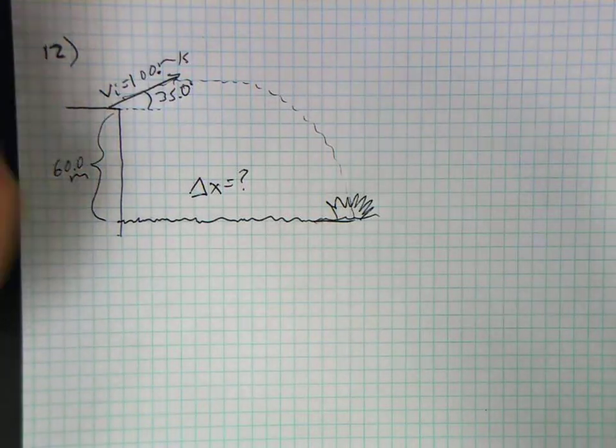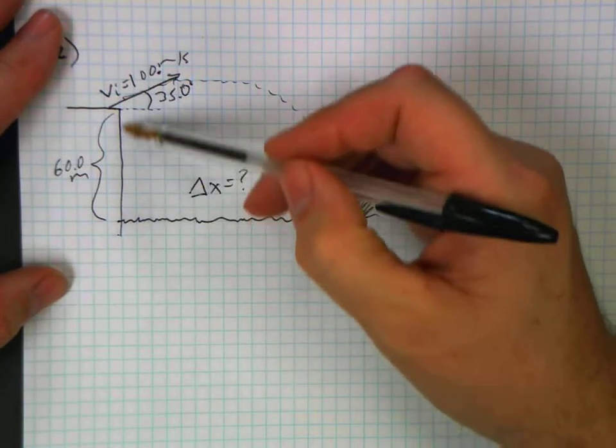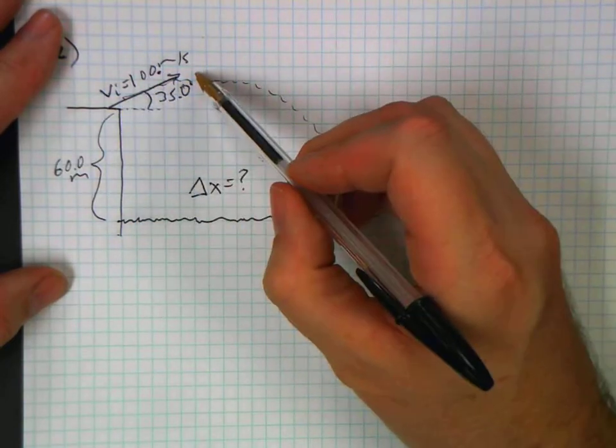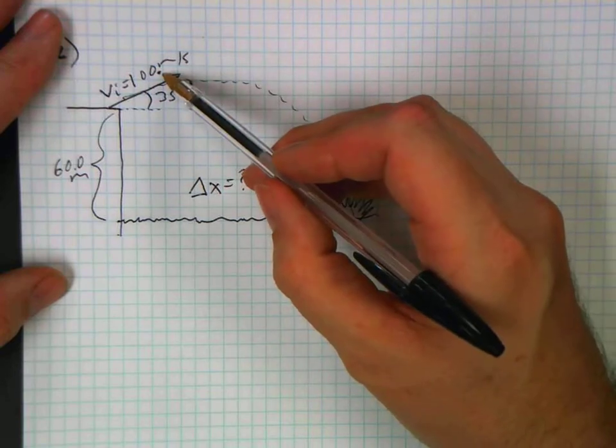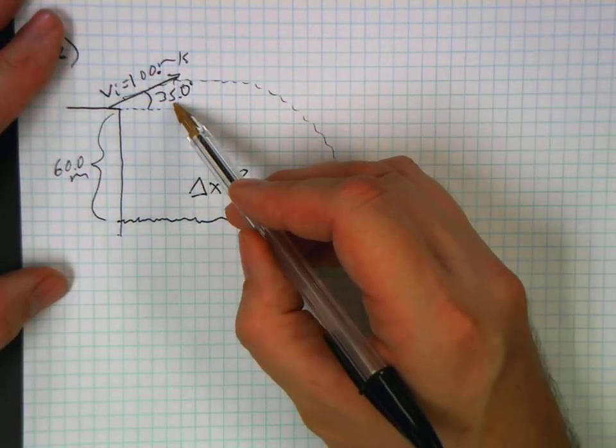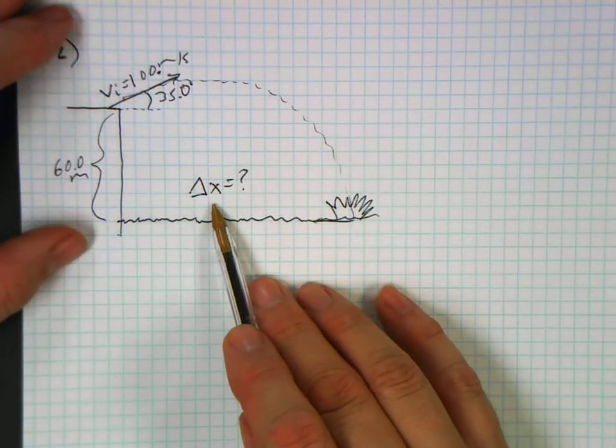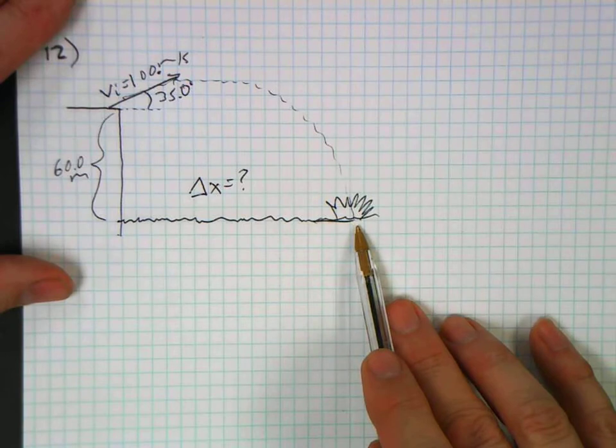Okay, a lot of people ask for number 12 on the sample test. You are 60 meters above the ocean on a cliff face. You're launching a projectile at 100 meters per second—we'll assume three sig figs—and it has a launch angle of 35.0 degrees. You are asked to figure out what delta x is, how far away from the cliff edge it hits the water.